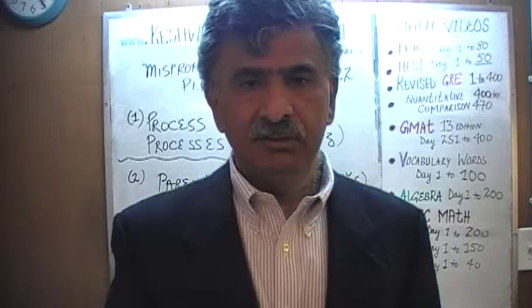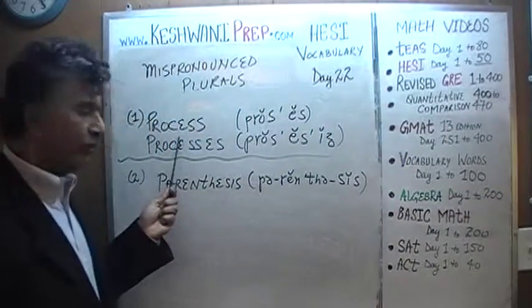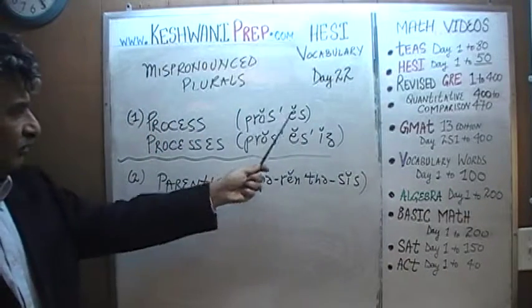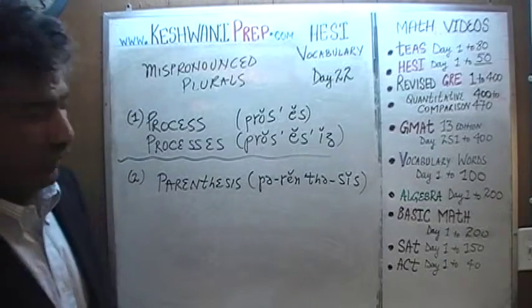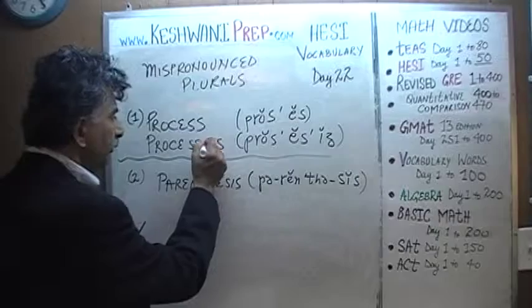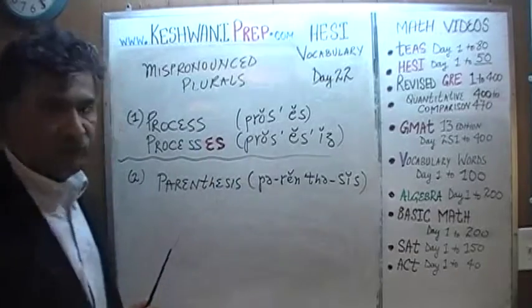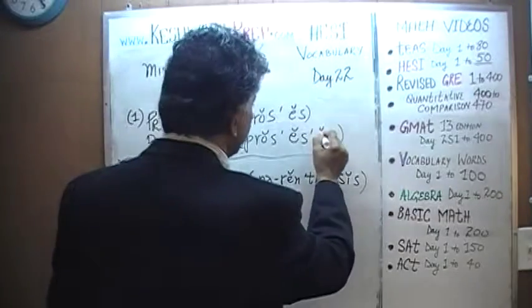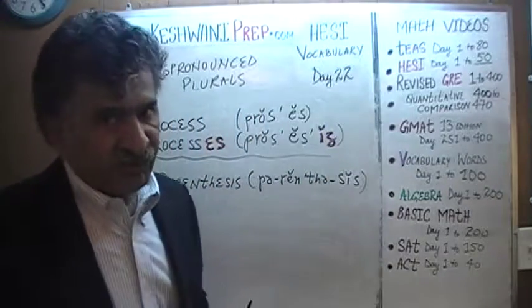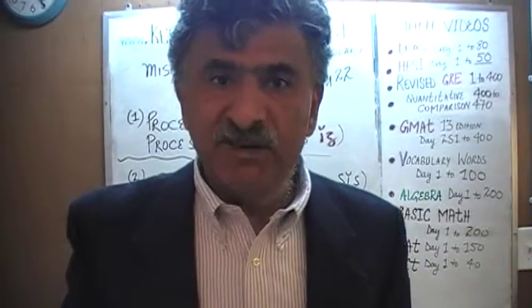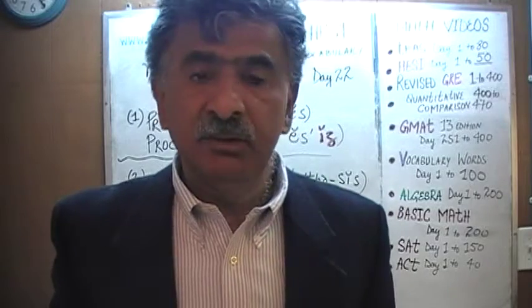The word 'process' is our first word. It's a very straightforward simple word. What happens when we have a plural of it? When we have plural, we need to put ES at the end, and as a result, we have one more syllable at the end with a Z sound. Process, processes.